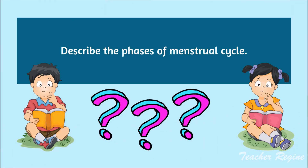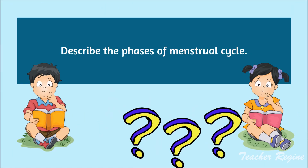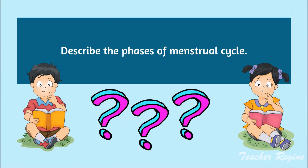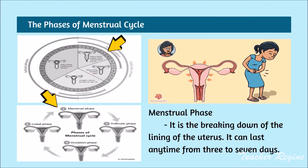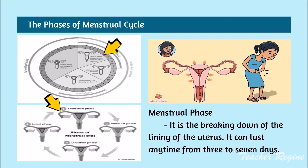Describe the phases of the menstrual cycle. Menstrual phase: it is the breaking down of the lining of the uterus. It can last any time from 3 to 7 days.